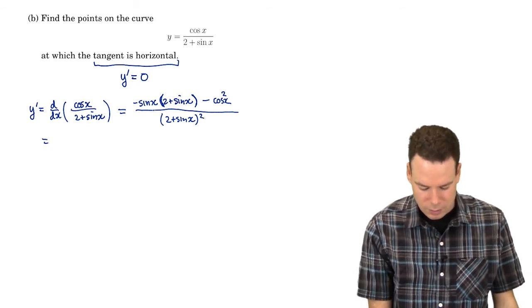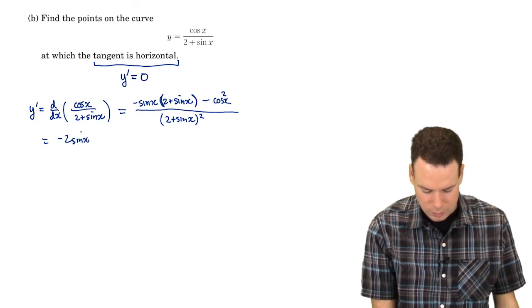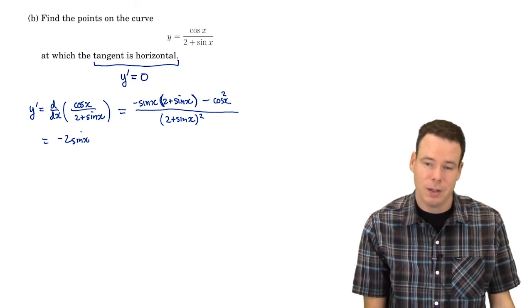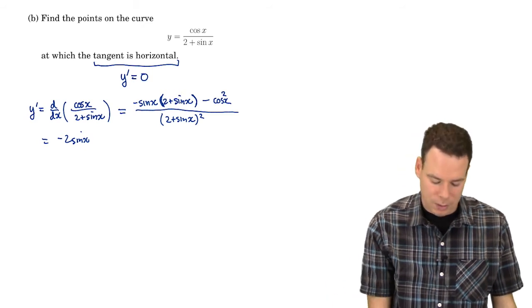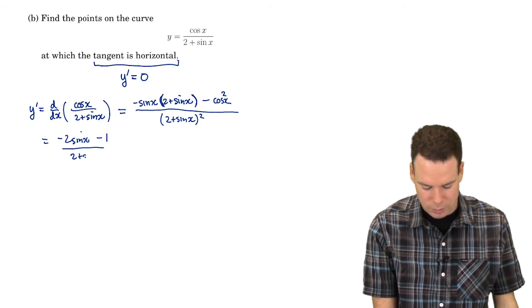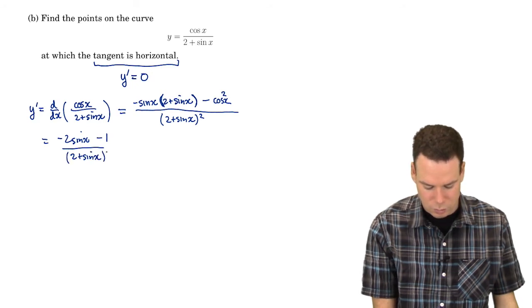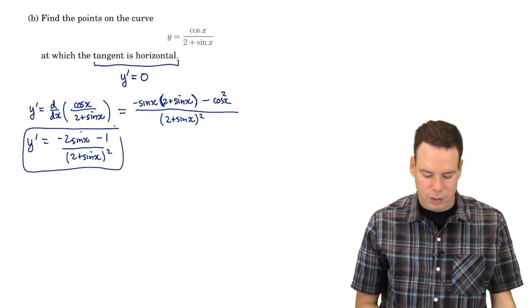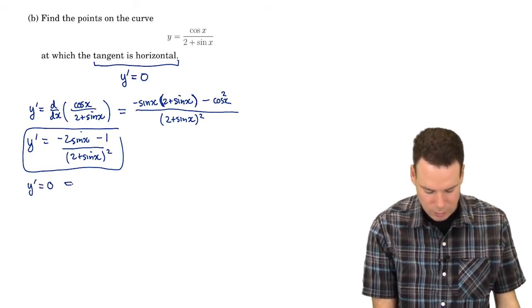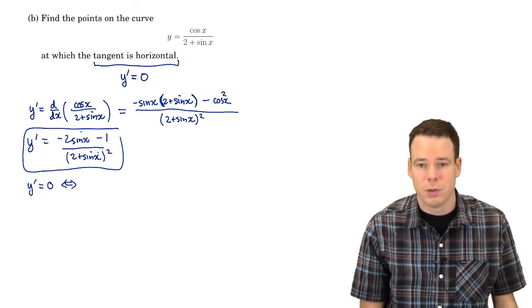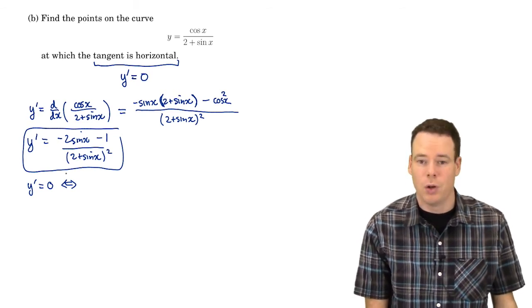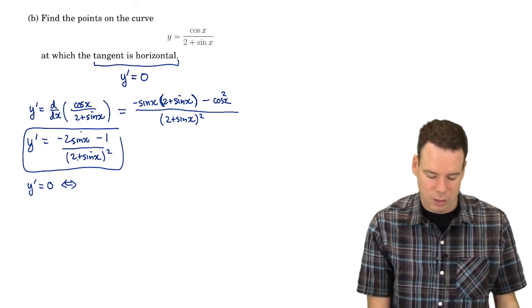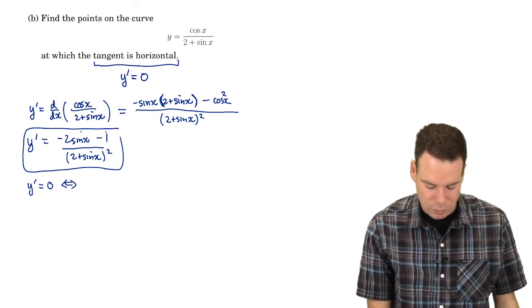We can simplify this a little bit. I get negative sine x times 2, so that's negative 2 sine x. Then negative sine x times sine x gives negative sine squared. But there's also a negative cos squared, so it's minus sine squared minus cos squared, and that equals negative 1. This is all over (2 plus sine of x) all squared. So there's our derivative. Now notice that the denominator is always non-zero: for it to be 0, sine of x would have to equal negative 2, but sine of x is trapped between negative 1 and 1.